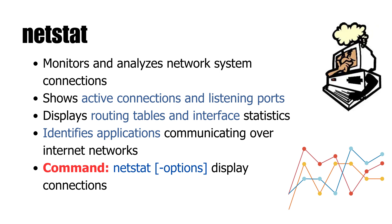The netstat command is like pulling back the curtain on your system's network activity. It shows active connections, listening ports, routing tables, and even interface stats. Type netstat on its own and you'll see all current connections. Add flags for more details — netstat -a shows all listening ports, and netstat -n shows raw IP addresses instead of host names. This command is gold for spotting what apps are talking to the internet, or even hunting down suspicious traffic. Security pros love it, but it's just as handy for everyday troubleshooting.